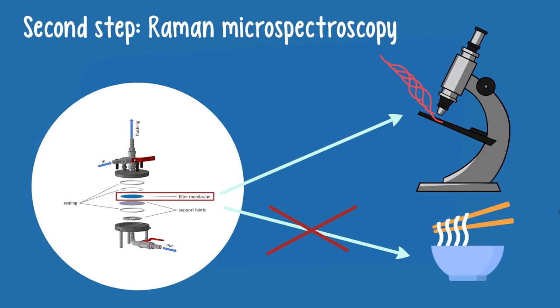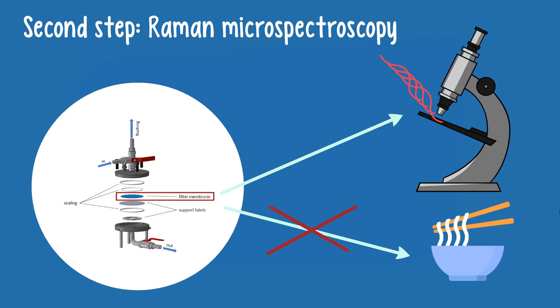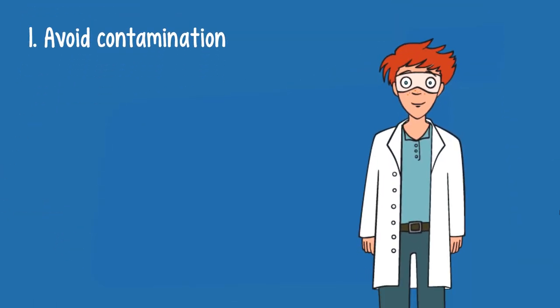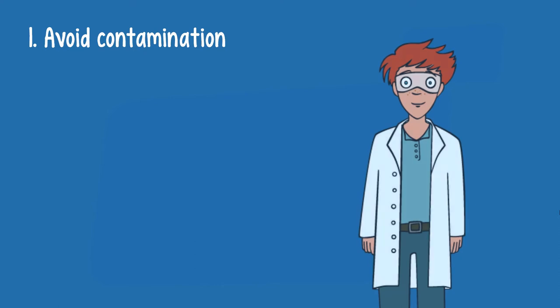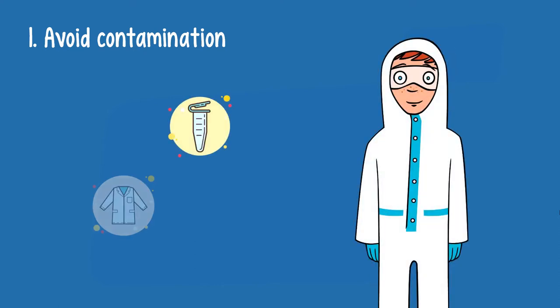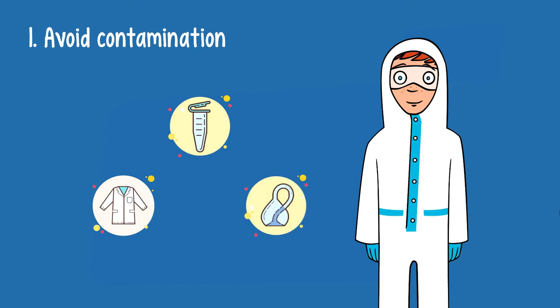But there are many additional steps to take into account. First, scientists need to carefully avoid contamination. Today, plastic is everywhere, also in laboratories. Therefore, they work in sterile and clean environments and avoid plastic containers and tools wherever possible.